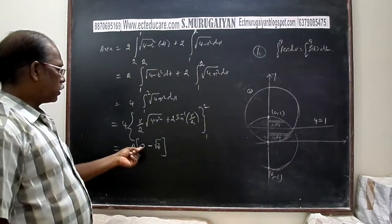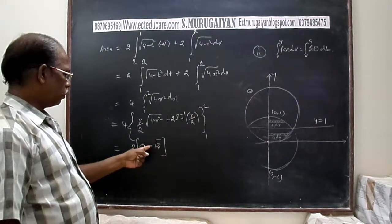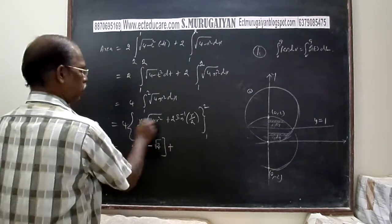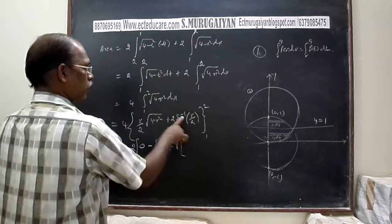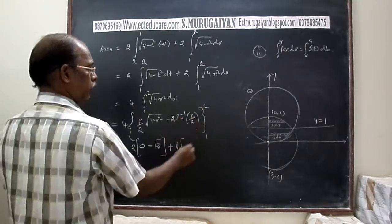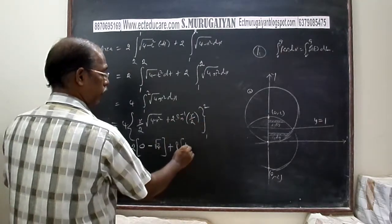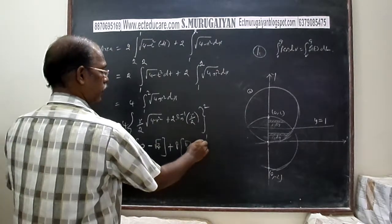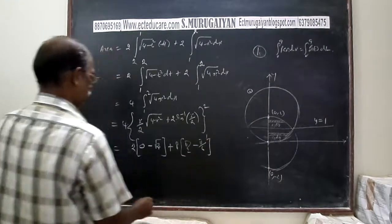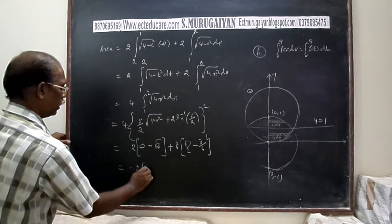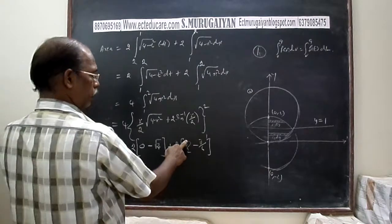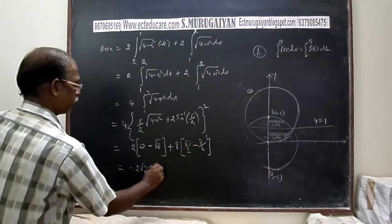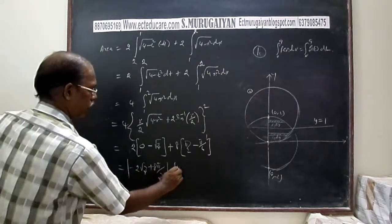Now applying the integral formula ∫√(a² - x²) dx = (x/2)√(a² - x²) + (a²/2) sin⁻¹(x/a) + C, with a² = 4, evaluated from 1 to 2. The upper limit gives: (2/2)√(4-4) + 2 sin⁻¹(1) = 0 + 2·(π/2). The lower limit gives: (1/2)√3 + 2 sin⁻¹(1/2) = (√3/2) + 2·(π/6). This gives 4[π - (√3/2) - π/3] = 8π/3 - 2√3.